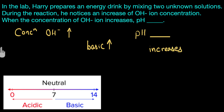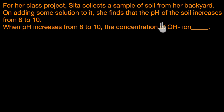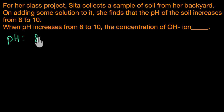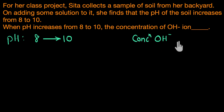Let's solve one last problem. For a class project, Sita collects a sample of soil from a backyard. On adding some solution to it, she finds that the pH of the soil increases from 8 to 10. So pH is increasing from 8 to 10. When pH increases from 8 to 10, what is happening to the concentration of OH⁻ ion?